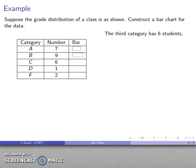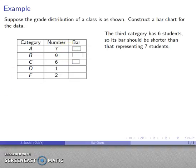The third category has six students. That's fewer students than seven, so the bar should be shorter. One student, much less than either six or seven, so I do want to draw an even shorter bar.